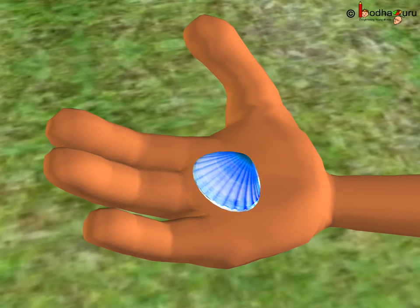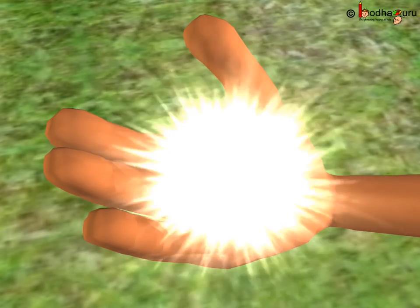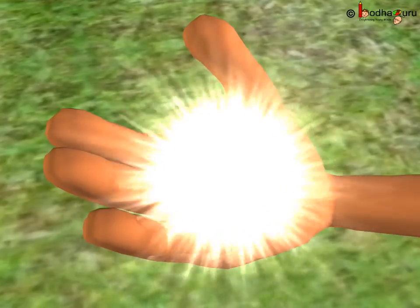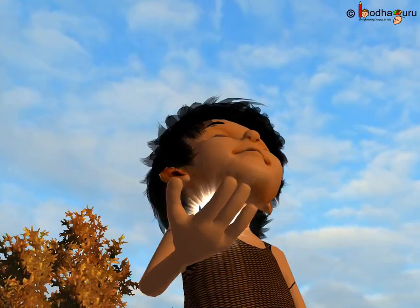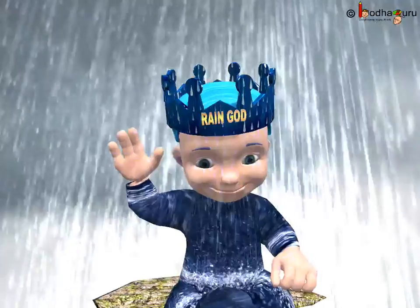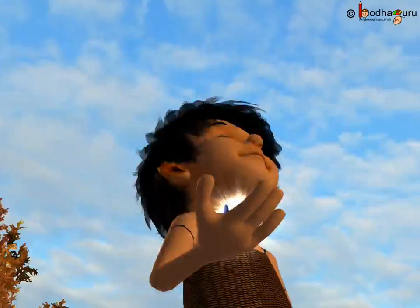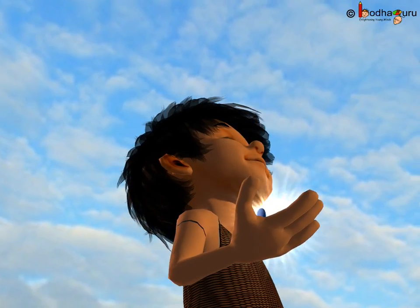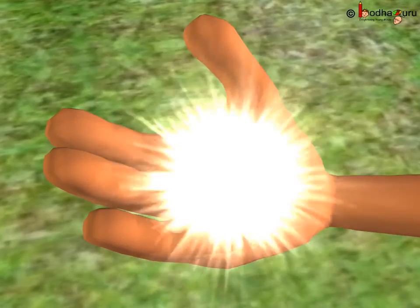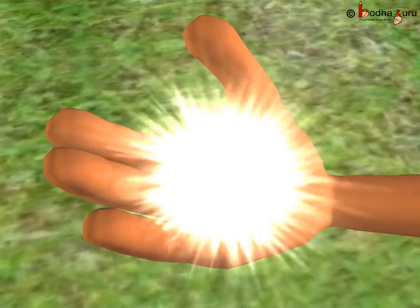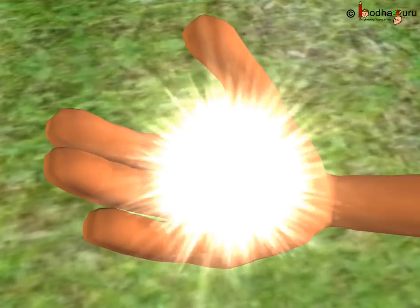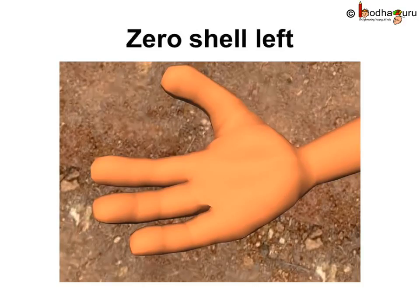Lastly, only one shell was left and the fisherman made one more wish. Remember that last wish with the rain god? So, when one shell was taken away from him, how many shells did the fisherman have? He was left with no shells — that is, he was left with zero shells.